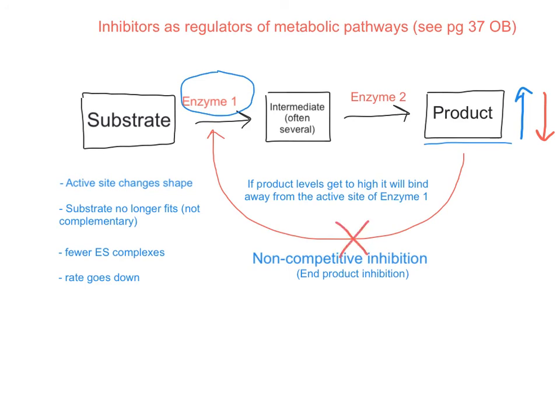This negative feedback loop will stop and enzyme 1 will no longer be inhibited. The consequence of this is that the product can now increase again in amount and will then eventually get too high again, in which case it will then act as a non-competitive inhibitor back on enzyme 1, and so on.